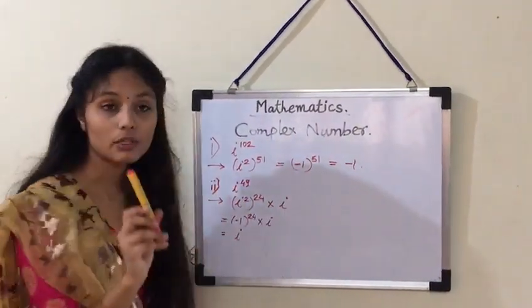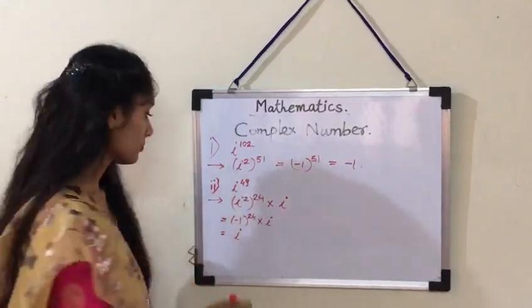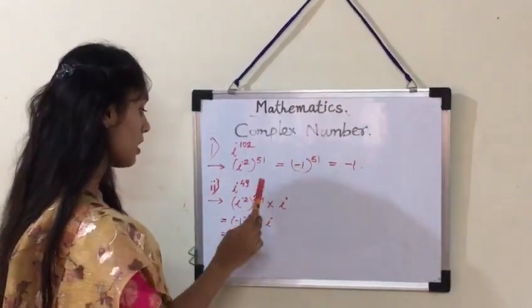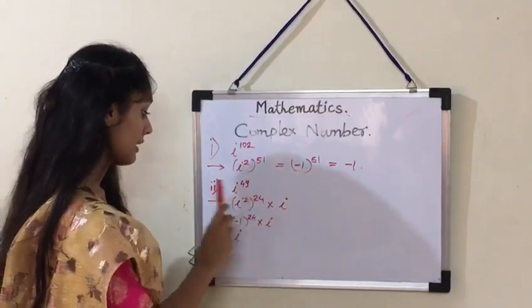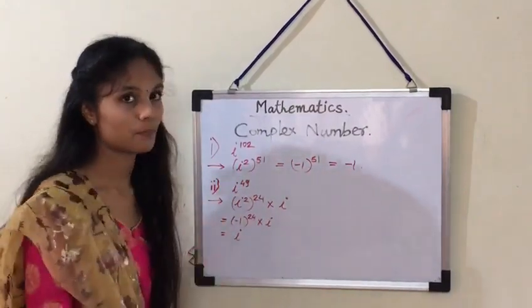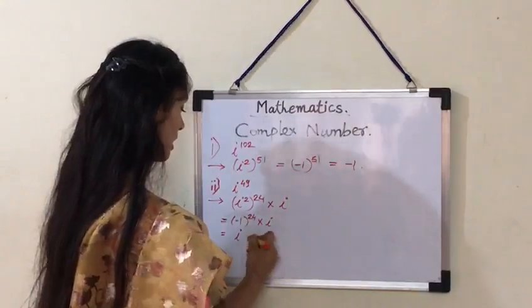Minus 1 raised to 24 is equal to 1 into i. So, the answer is i.